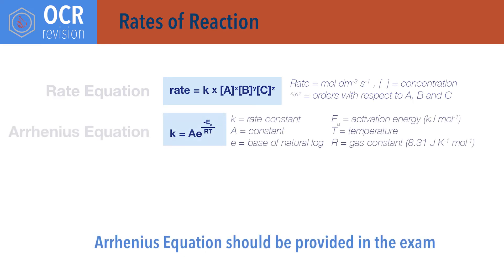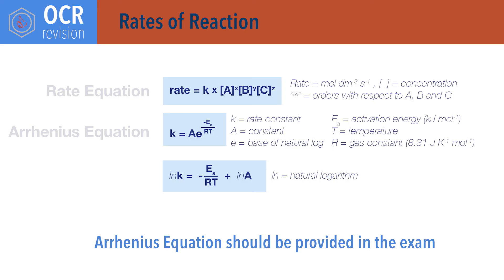K equals A times e to the power minus Ea over RT. This is the Arrhenius equation, where K is the rate constant, A is the Arrhenius constant or pre-exponential factor, e is Euler's number — a mathematical constant — Ea is activation energy with units of kilojoules per mole, R is the universal gas constant 8.31 joules per kelvin per mole, and T is temperature in kelvin. The Arrhenius equation can also be given in the form ln K equals minus Ea over RT plus ln A, where ln is the natural logarithm.